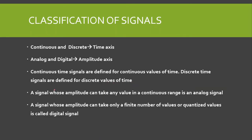For analog and digital, we need to see the amplitude axis. An analog signal is one whose amplitude can take any value in a continuous range. A digital signal is one whose amplitude can take only a finite number of values, or quantized values — for example, 2, 4, 8, 16, 32, and so on. If a signal's amplitude can only take a finite number of values and not every value, it is called a digital signal.